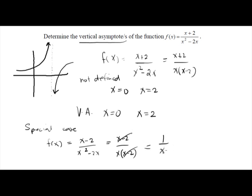Looking at the resulting function 1/x, it is not defined at x = 0, so you can say x cannot equal 0, giving a vertical asymptote at x = 0. Now, what happened to the x − 2 factor? When a factor in the denominator is cancelled, instead of becoming a vertical asymptote, that value becomes a hole in the graph. So x is still not defined at 2 and the graph cannot be continuous there, but the gap will be a hole, not a vertical asymptote.